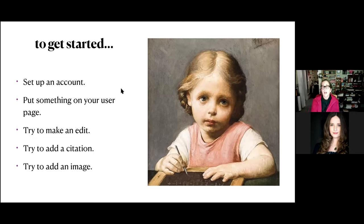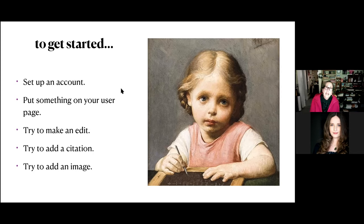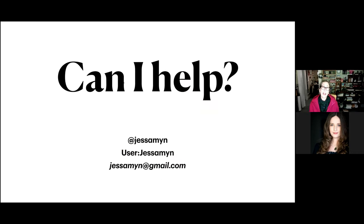Last steps — if you want to get started, good steps are: set up an account, noodle around with your user page to get used to typing in that kind of box, try to make an edit on a page, try to add a citation, try to add an image, and see if any of those things grab you. Have fun at the edit-a-thon, learning to make substantive useful changes on Wikipedia for people in your line of work. If I can help, I can be reached on Twitter. My username on Wikipedia is Jessamyn and my email address is jessamyn@gmail.com. I'd really be happy to help you with it. Thanks.